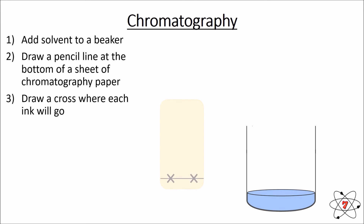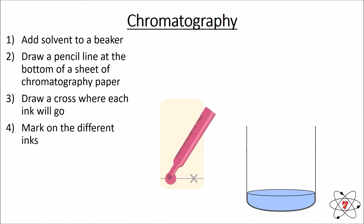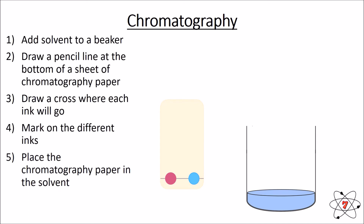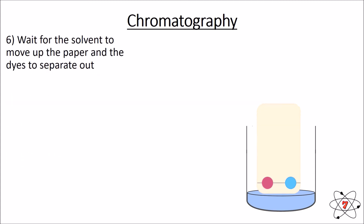Using the pencil we draw two crosses on the line — this is where we mark the inks we are going to separate. We then place our chromatography paper into the solvent, but we need to be very careful: the ink should not directly touch the solvent. If the ink directly touches the solvent, it will simply dissolve in and the experiment will not work. We then wait for the solvent to move up the paper, which causes the inks to dissolve and move up as well, separating out the different dyes.